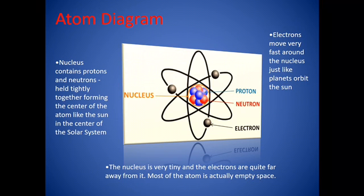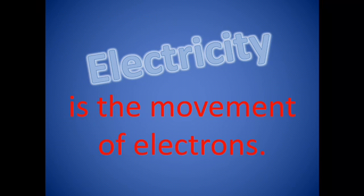Electrons, they move very fast around the nucleus just like planets orbit the sun. The nucleus is very tiny and its electrons are quite far away from it. Most of the atom is actually empty space. Electricity is the movement of electrons.